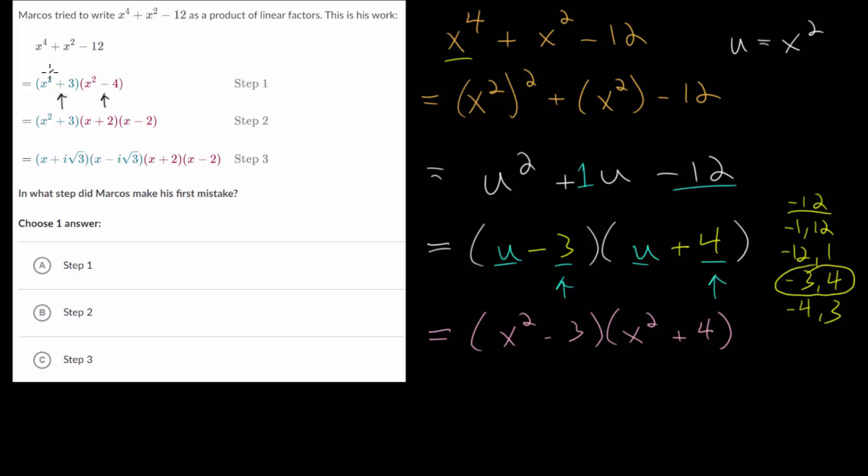Since if we carried out distribution here, notice that x squared times x squared is x to the fourth. We would get minus 4x squared and plus 3x squared and minus 12 at the end. When you recombine these, you would get minus x squared rather than positive x squared.